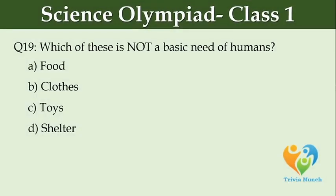Which of these is not a basic need of humans? Option A: Food. Option B: Clothes. Option C: Toys. Option D: Shelter.